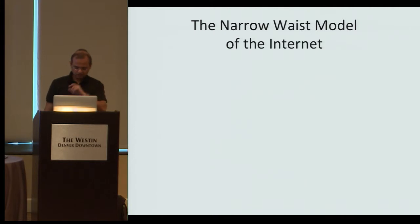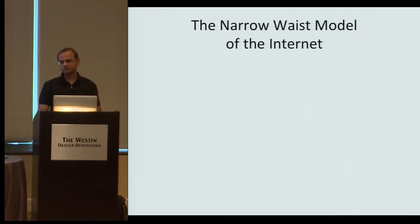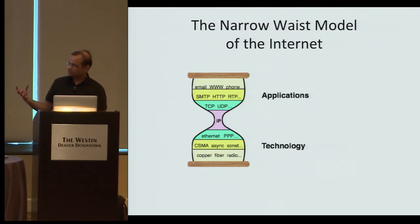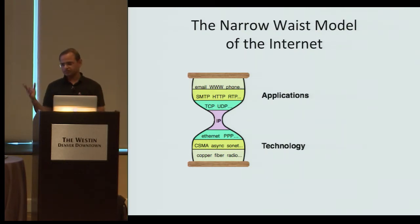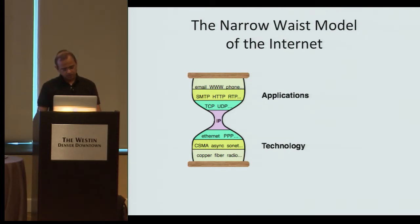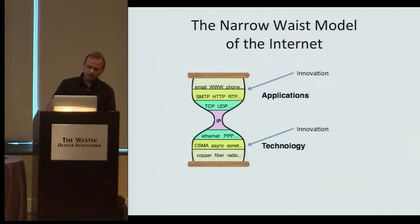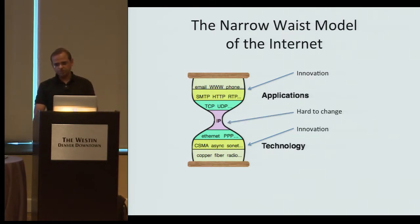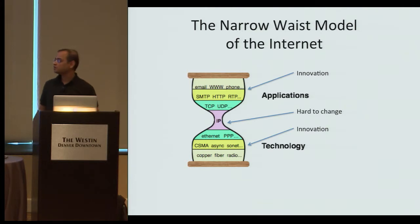I read an article about the internet talking about the narrow waist of the internet. If you look at it like an hourglass, you've got a plethora of protocols at the physical layer — ethernet, copper, fiber — and at the top, a profusion of protocols solving specific unique problems. Right in the middle is the IP layer, which is very hard to change. People have tried, there've been several attempts at internet two or three, but it still hasn't changed because it's so hard to change.